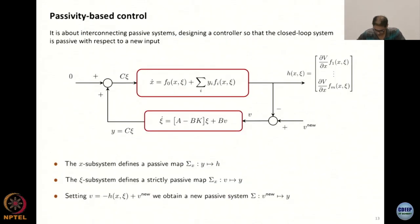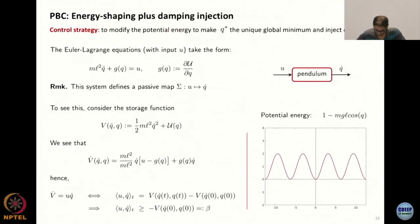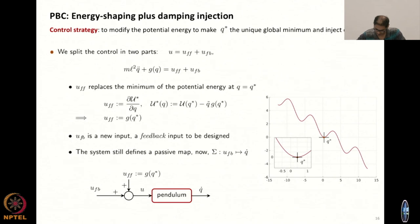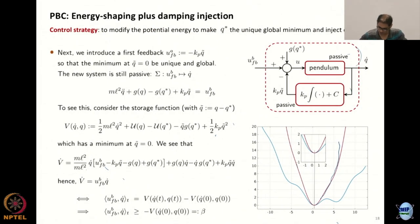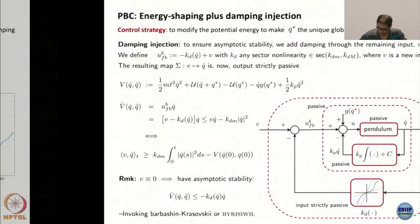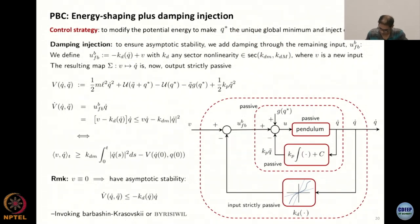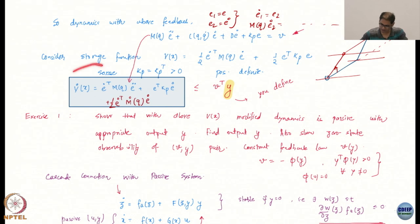If you remember from the energy shaping example, passivity was with respect to the q_dot variable — he got passivity with respect to q_dot. In this case also what I need you to do is complete the V_dot expression, and you should get something like V^T * Y for some Y. You have to come back and tell me what Y is.